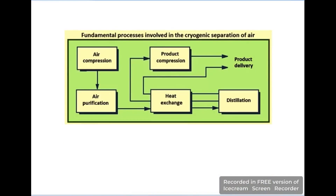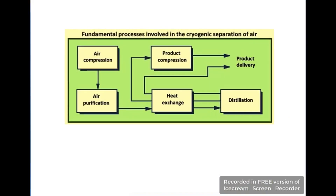Here I will summarize the diagram for your best understanding. In the first section, air compression takes place, and in the second section, air purification takes place where the impurities of the air are removed. That air for further processing is required at low temperature conditions, so to achieve low temperature, heat exchangers are used.